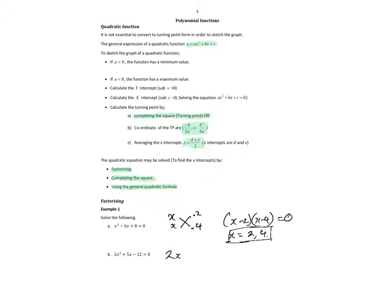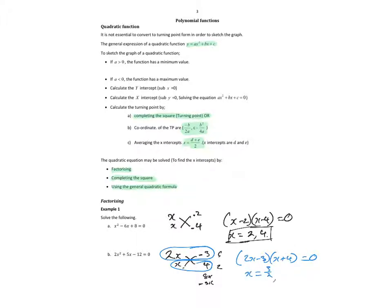I'll try the cross method first. 2x and x cross-multiply with factors of 12 — maybe 4 and 3, or 6 and 2. We need 5 in the middle. 2x times 4 is 8x, x times 3 is negative 3x. Add them together and we get positive 5x. So it factorises to 2x minus 3, times x plus 4.